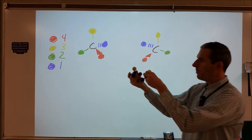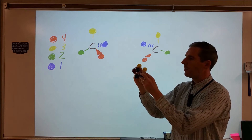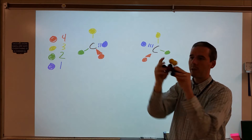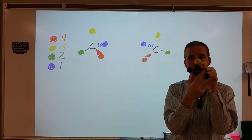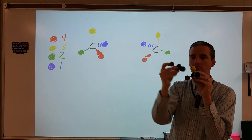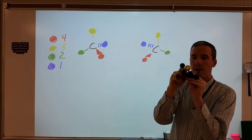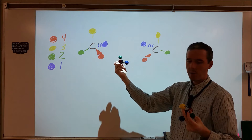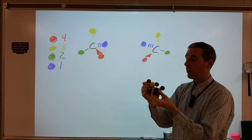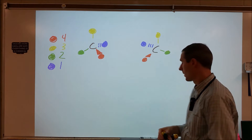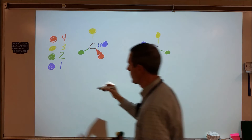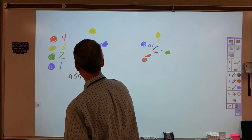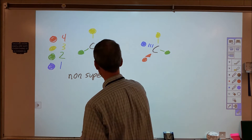It turns out that if I were to manipulate these and move them around, you would be able to see that. For instance, if I put the yellow and the green together, the red and the blue become opposing one another. If I flip that around so that the red and the blue are in the same spots, then the yellow and the green become in opposite spots. There's no way for me to take this one in my right hand and this one in my left hand and make them exactly the same. So the term for that is non-superimposable.